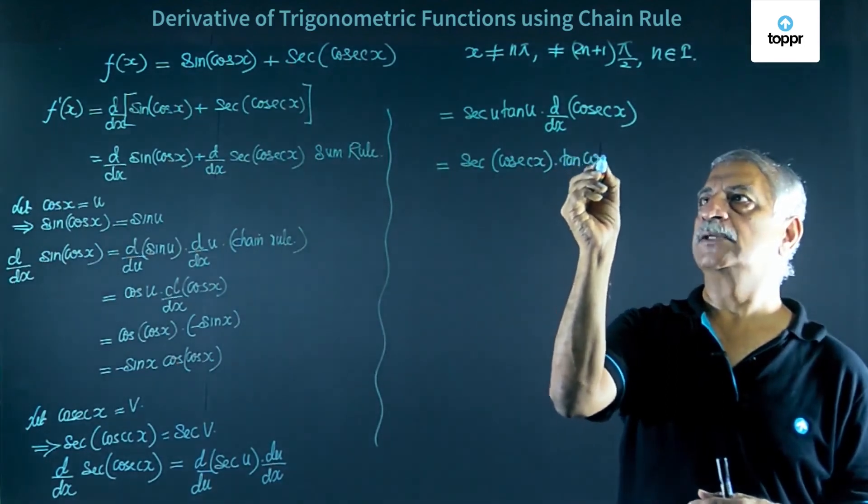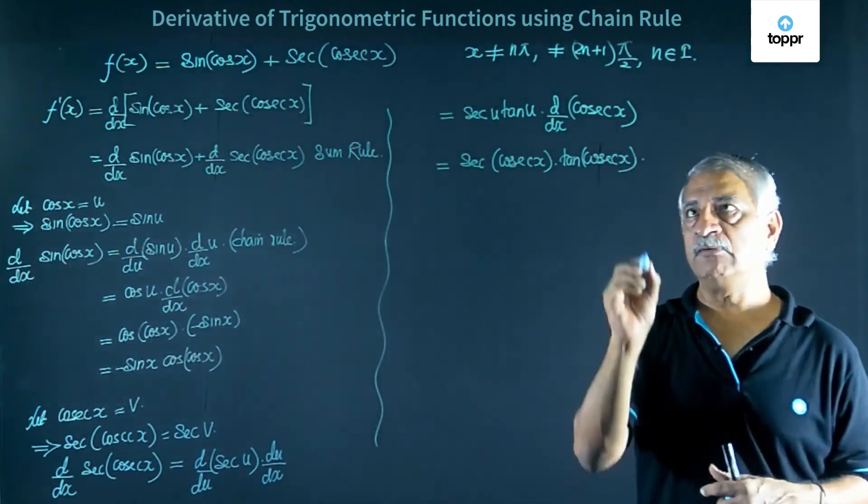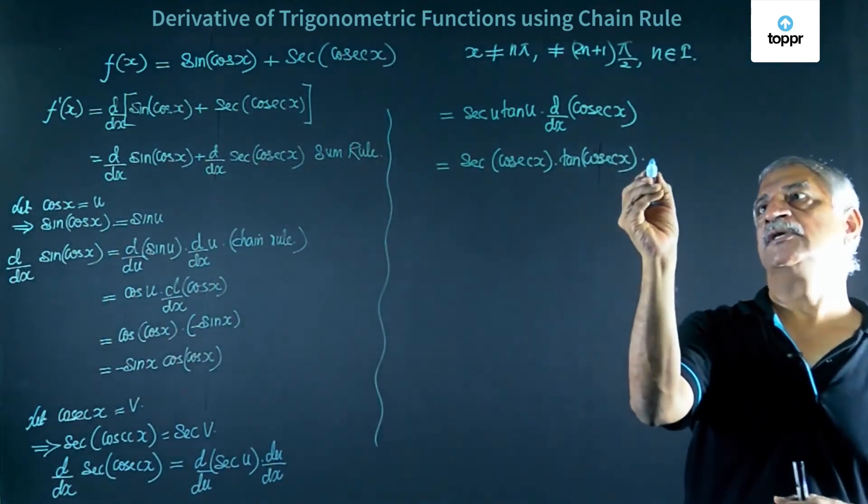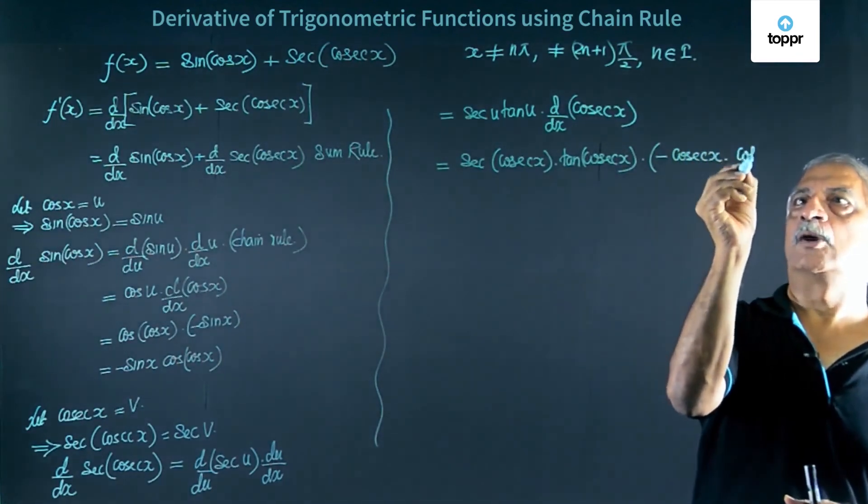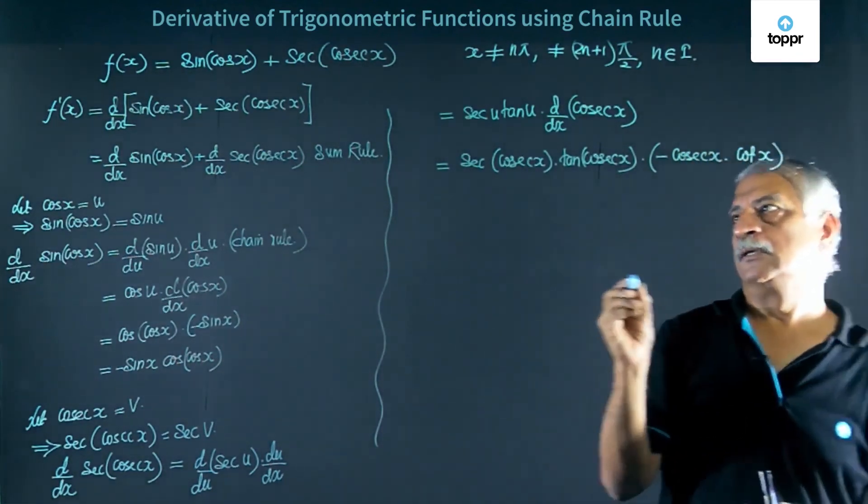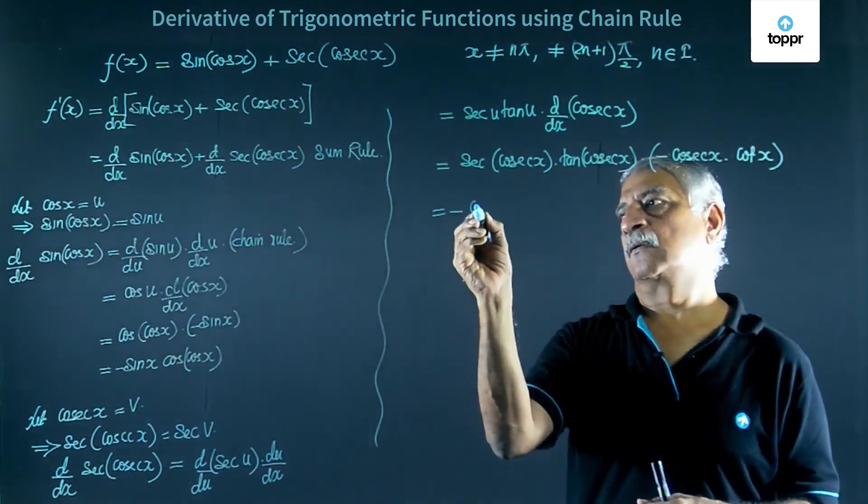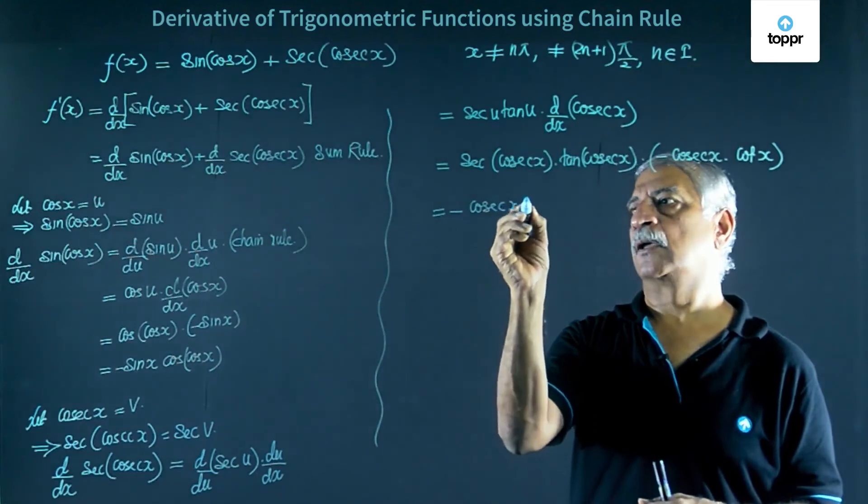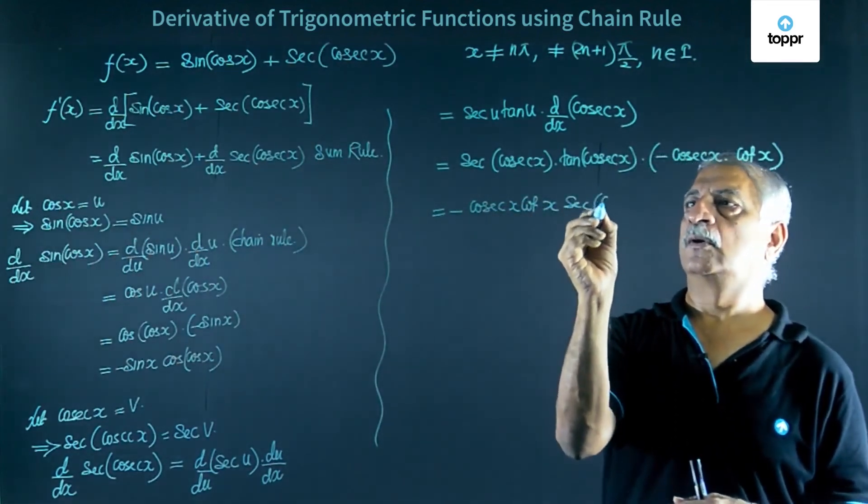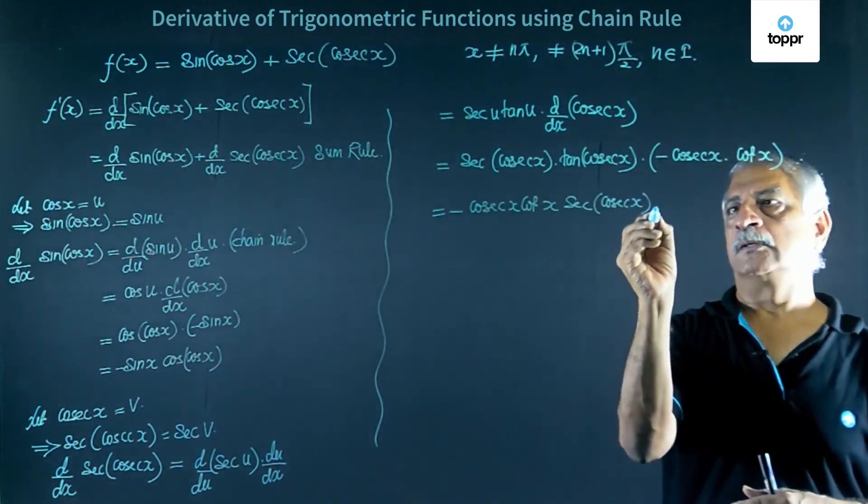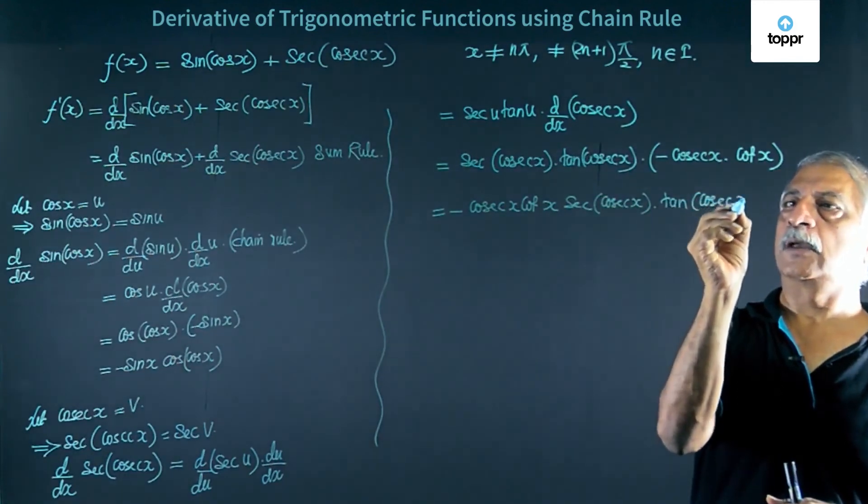This gives me sec of cos x into tan of cos x into derivative of cos x is minus sin x.